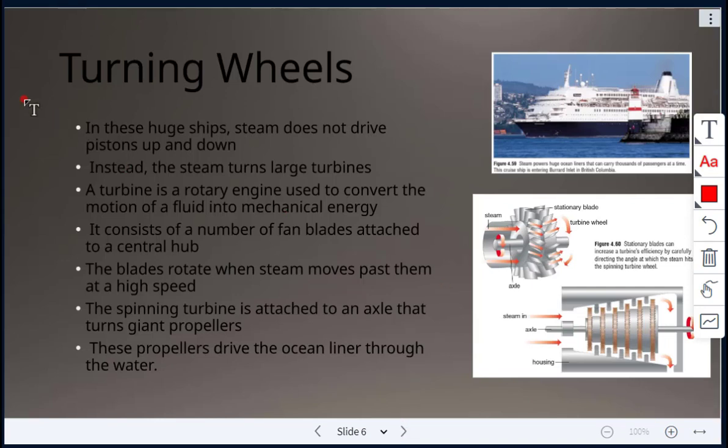Here in the huge ships, steam is not driving pistons up and down. Instead, the steam is turning these large turbines. These turbines, it's a rotary engine which uses the motion of a fluid to convert it into mechanical energy. There's a number of fan blades attached to a central hub, and the blades will rotate when steam moves past them at a high speed. The spinning turbine is attached to an axle that will then turn giant propellers. Those propellers will then drive the ship through the water.